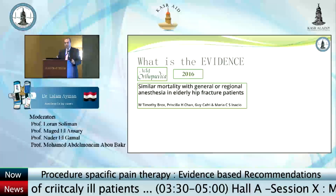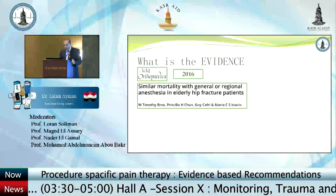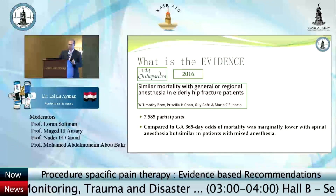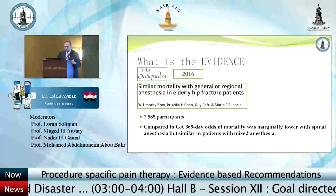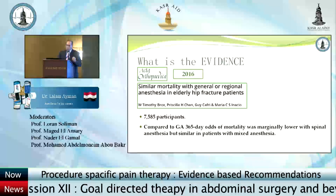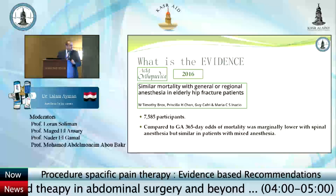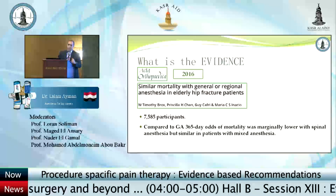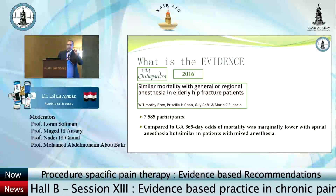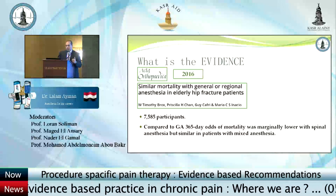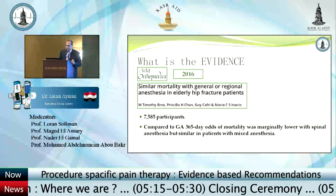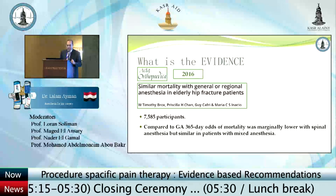In Acta Orthopaedica in 2016, mortality between general and regional anesthesia was discussed in nearly 7,500 participants. The odds of mortality were marginally lower with spinal anesthesia, but similar in patients with mixed anesthesia — though this did not reach statistical significance. They determined that mortality is nearly equal between the two approaches.